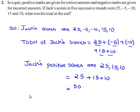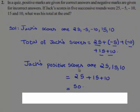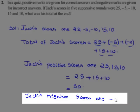We will collect Jack's negative scores that are minus 5 and minus 10 and we will add them up. So, Jack's negative scores are minus 5, minus 10.